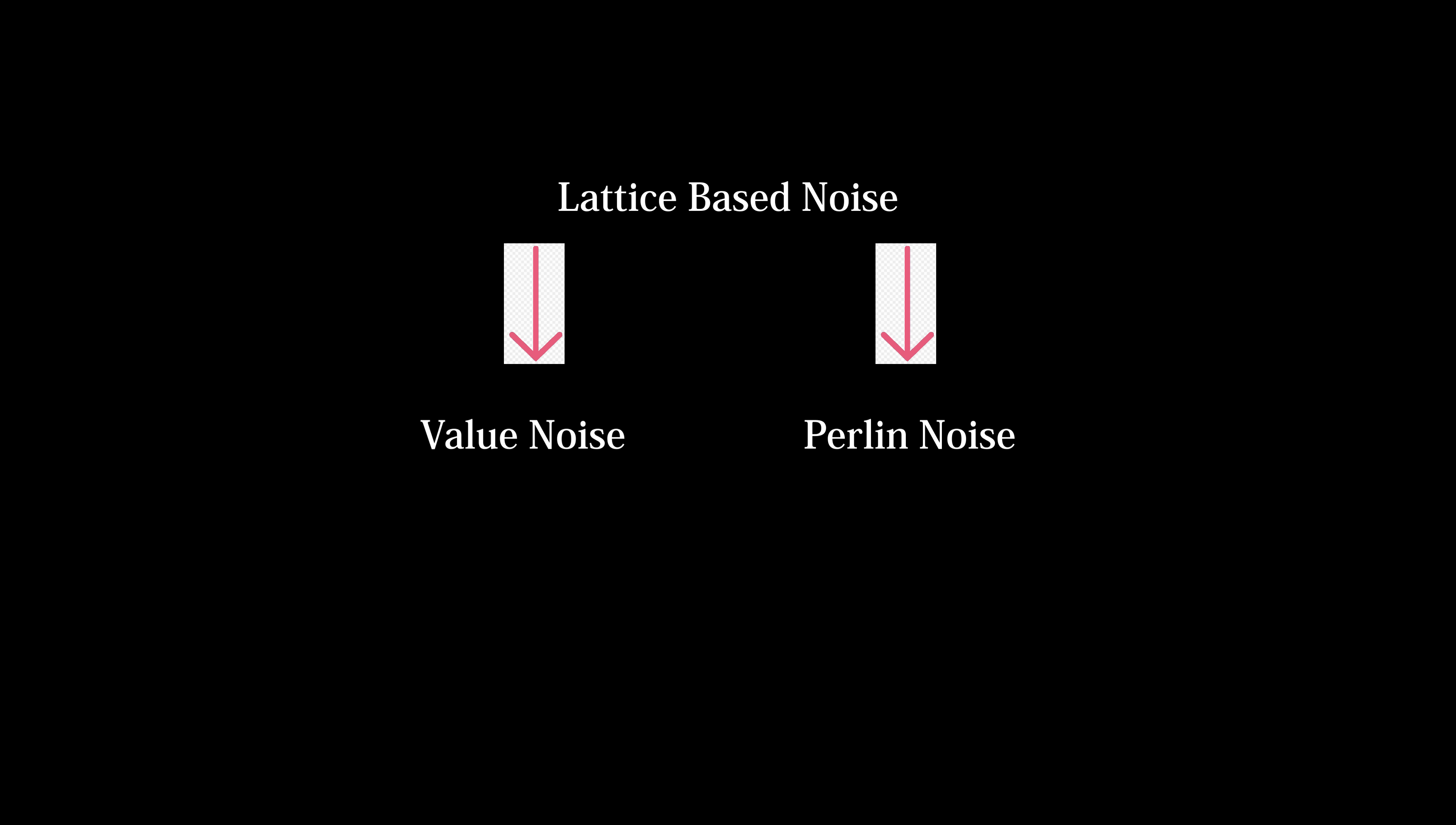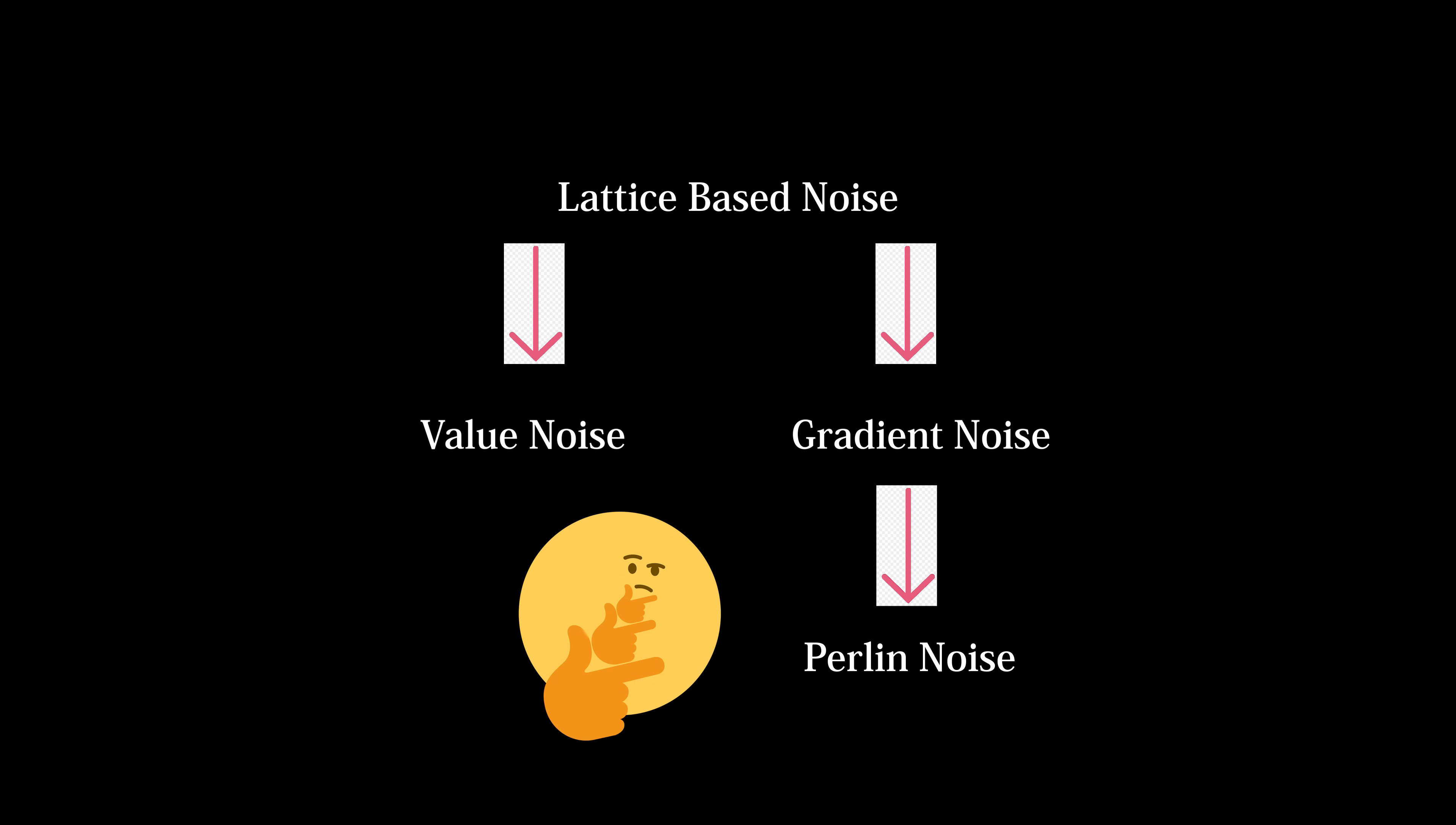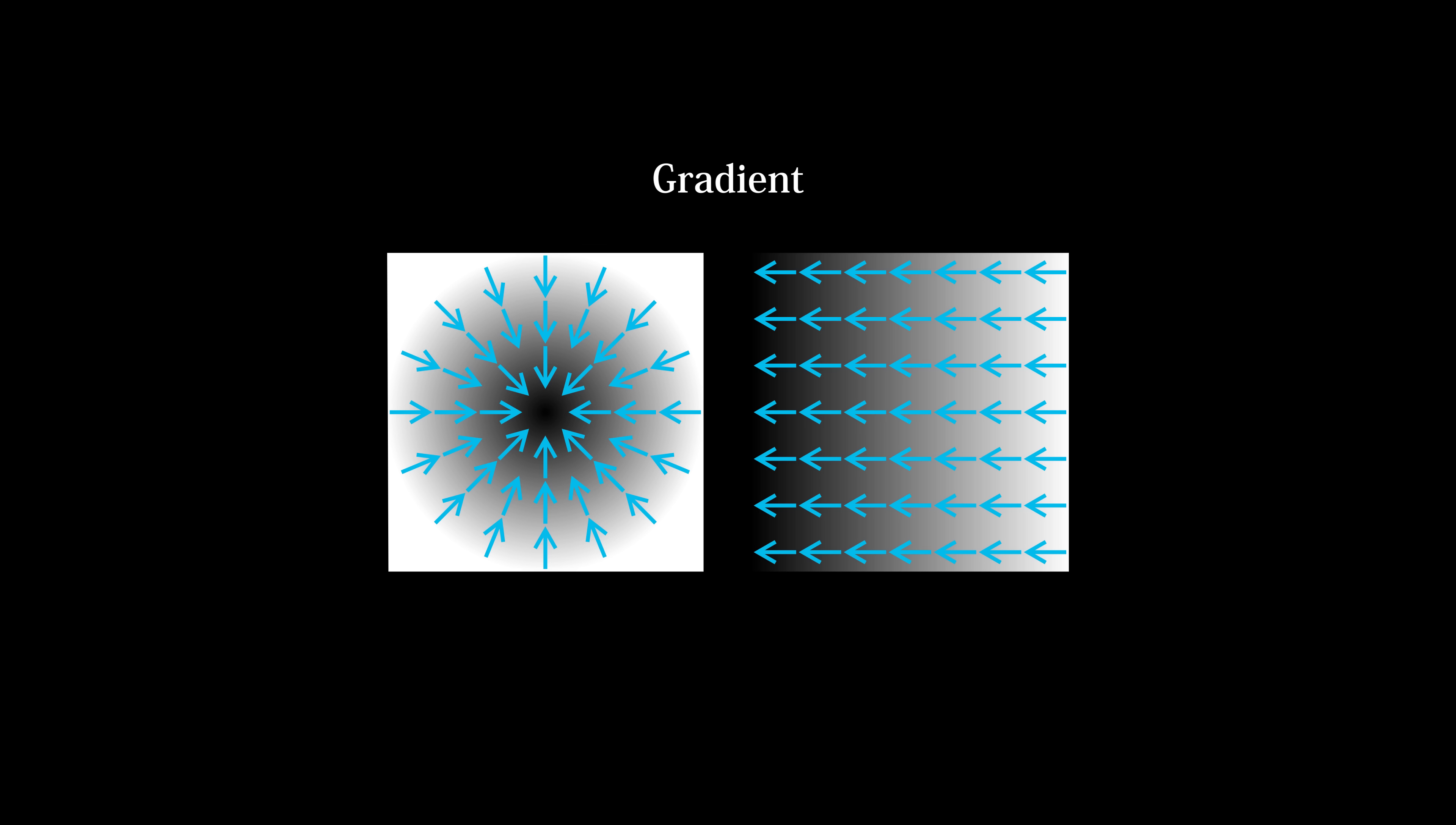While value noise and perlin noise are both lattice-based, perlin noise belongs to a different subcategory known as gradient noise. So I guess they're more like cousins, but I don't feel like rewriting the earlier parts of my script after realizing this. A gradient is a vector that points in the direction of greatest change from a given position. Think of it like the direction a function is moving in at a given point in space.